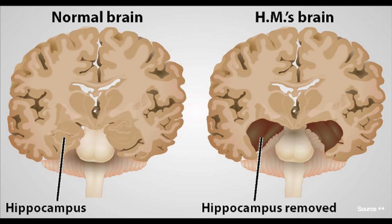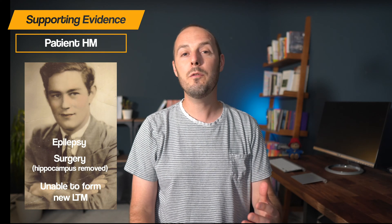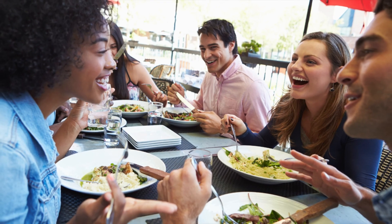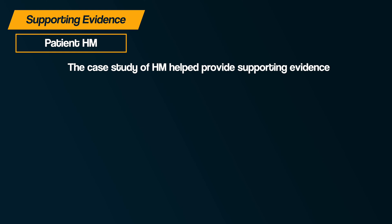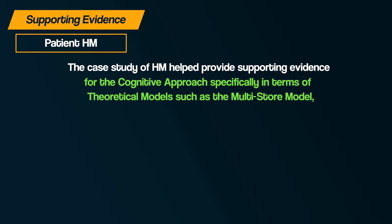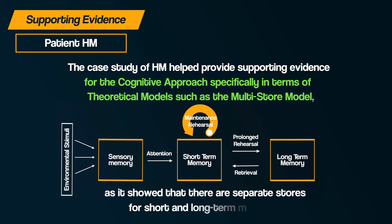During his childhood, HM had been involved in a bicycle accident, which resulted in him developing epilepsy. Many of the seizures he experienced worsened to the point where medication was having little impact, leaving him with the option of surgery. However, when HM had specific parts of his brain removed, whilst it helped reduce his seizures, it left him with problems with his memory. In short, HM was unable to form any new long-term memories. He could remember things before the surgery but couldn't form memories after the surgery. His short-term memory was fine, but he couldn't transfer any of this information to long-term memory. The case study of HM helped provide supporting evidence for the cognitive approach, specifically in terms of the multi-store model, as it showed that there are separate stores for short and long-term memory.